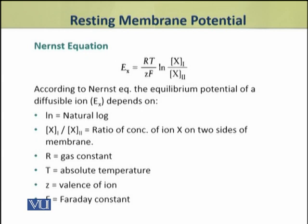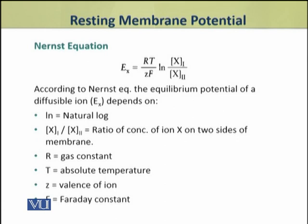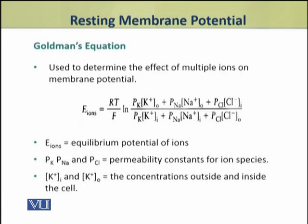The Nernst equation also depends on the gas constant R, absolute temperature T, the valence of the ion Z, and Faraday's constant F. So we can read the Nernst equation as: Ex, that is, the equilibrium potential of diffusible ion X, is equal to RT over ZF into the log of the concentration of X inside the membrane over the concentration outside the membrane.